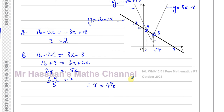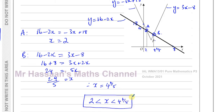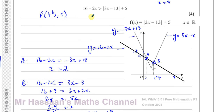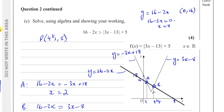The line y equals 16 minus 2x is above, or greater than, our modulus function between these two values. So the solution is x is between 2 and 4 and four fifths. When x is greater than 2 and less than 4 and four fifths, the inequality holds true. So there's the solution to part C.